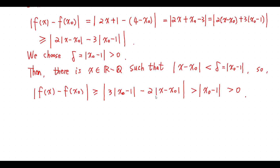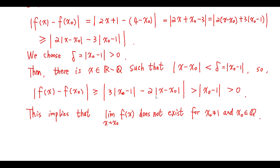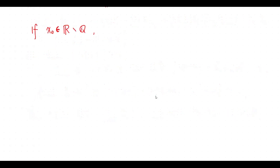Then there is an irrational number x such that the absolute value of x minus x0 is less than delta, so that the absolute value of f(x) minus f(x0) is greater than delta. This implies that this limit does not exist for this case.